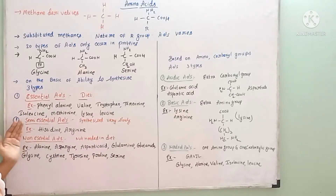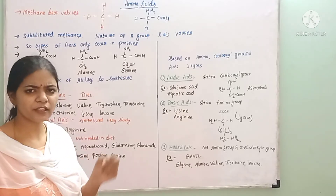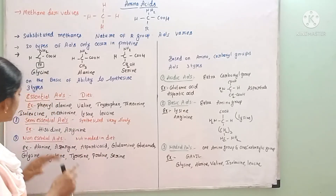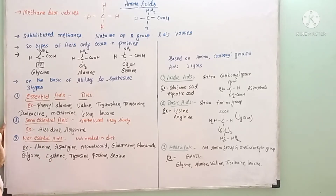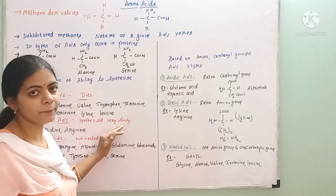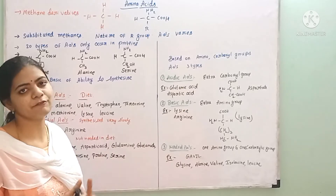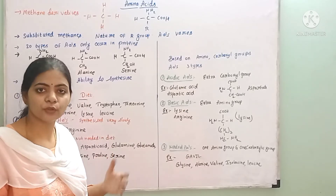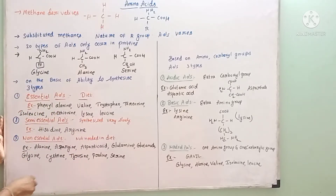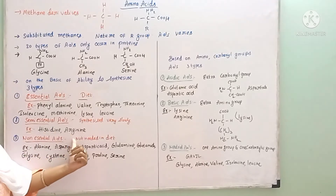Two amino acids are synthesized very slowly by our body only during certain stages of life — these are called semi-essential amino acids. They are synthesized during the growth period and during lactation. Examples are histidine and arginine.